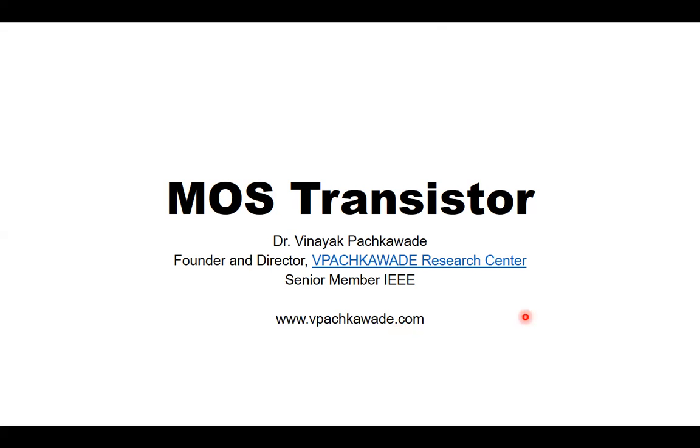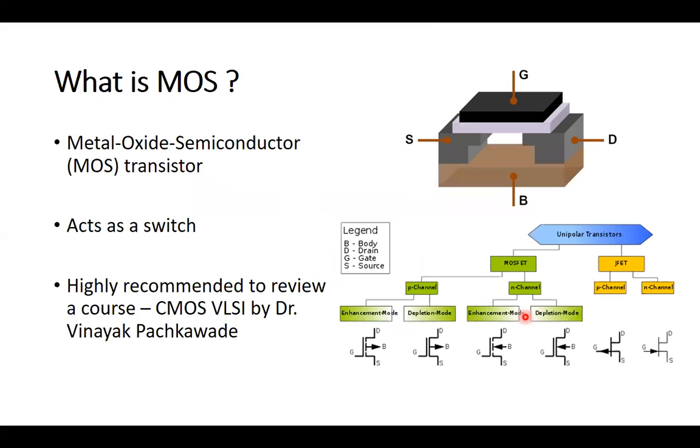So let's start with this course and understand the details of the basics. To start with, what is a MOS? So MOS stands for metal oxide semiconductor. You can see in the right picture, there is a silicon substrate which is also called as a body of the transistor or body of a device.